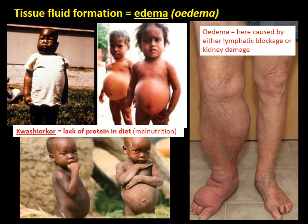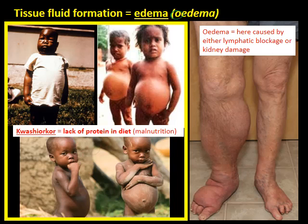If there is a buildup of tissue fluid around the tissues of the body, we call this oedema — spelled with or without an 'o' at the front. It is commonly caused by a lack of protein in the diet, a form of malnutrition. A lack of protein in the diet causes a lower concentration of plasma proteins in the blood, which affects the osmotic pressure at the venous end of the capillary network so it is not as significant, meaning tissue fluid does not drain back in as it should, causing a buildup of swelling. This is seen in children with a condition called kwashiorkor.